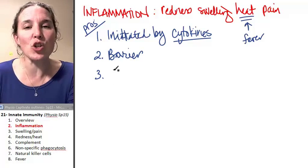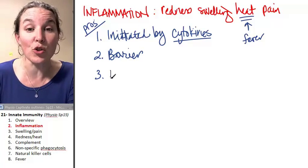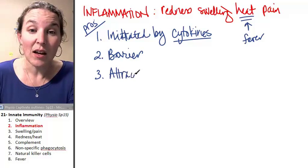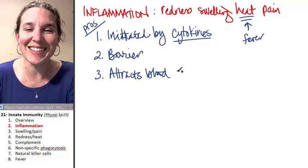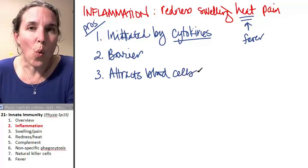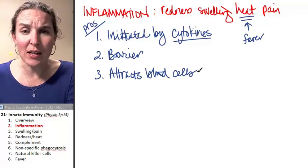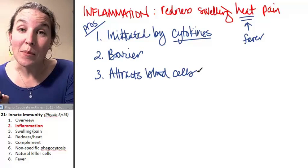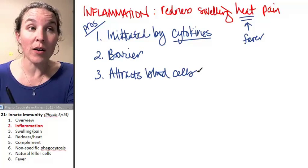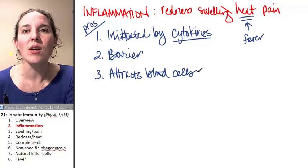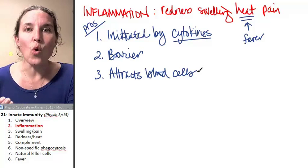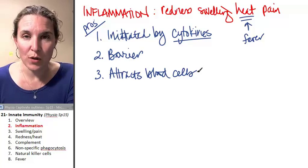It attracts, the inflammatory response attracts blood cells. Now, how? Cytokines. And why? Why would you want to bring in blood cells? Your white blood cells are the warriors of the immune response.